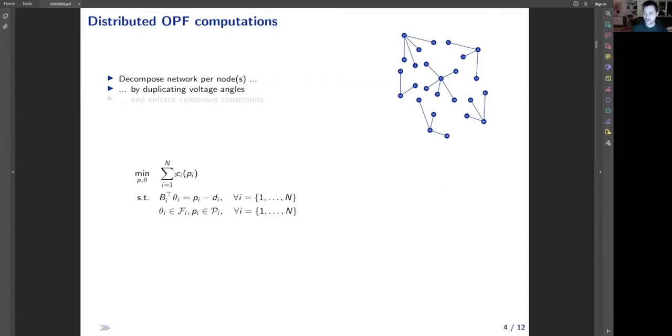The original problem can be separated such that the objective function is separable per node, and nodal power balance constraint and flow and generator limits also become node specific. To restore the connectivity of the graph, one needs to enforce consensus constraints that require the voltage at neighboring nodes to match the same consensus value, such that every node tries to update its voltage estimates towards the consensus variable.